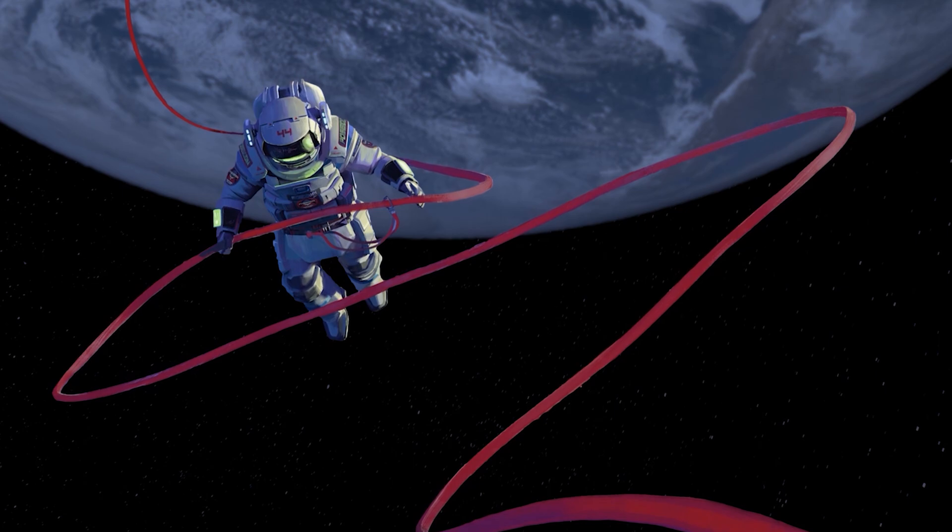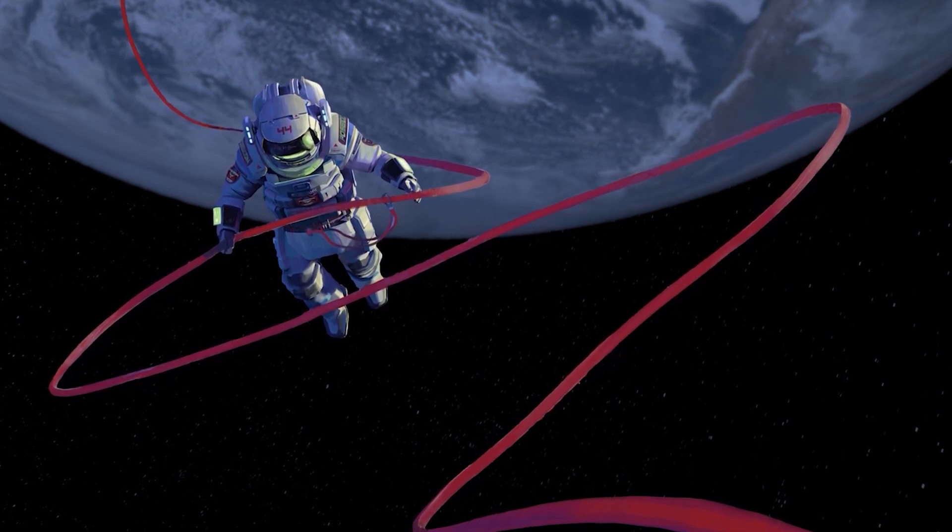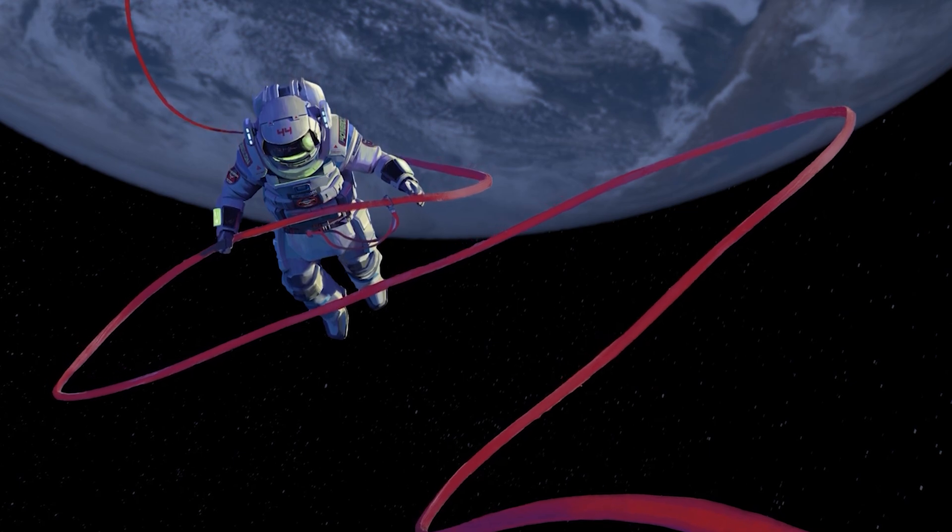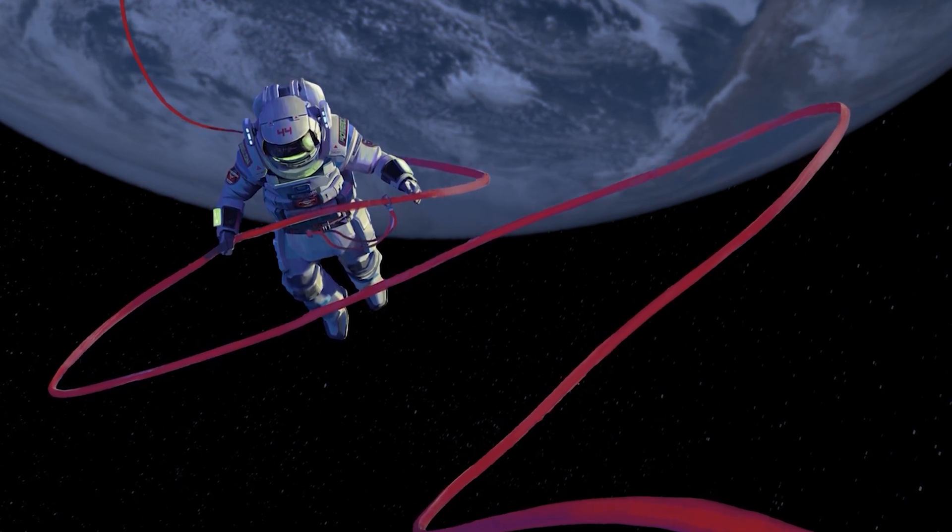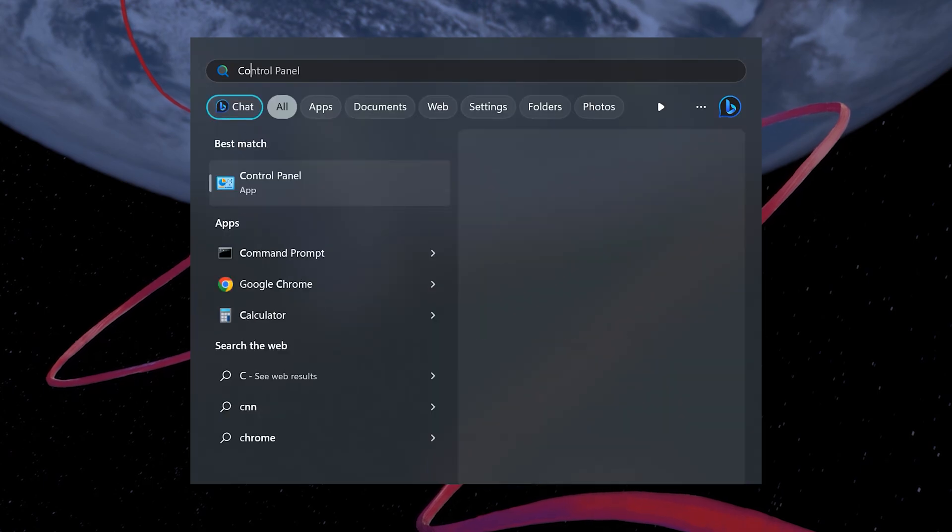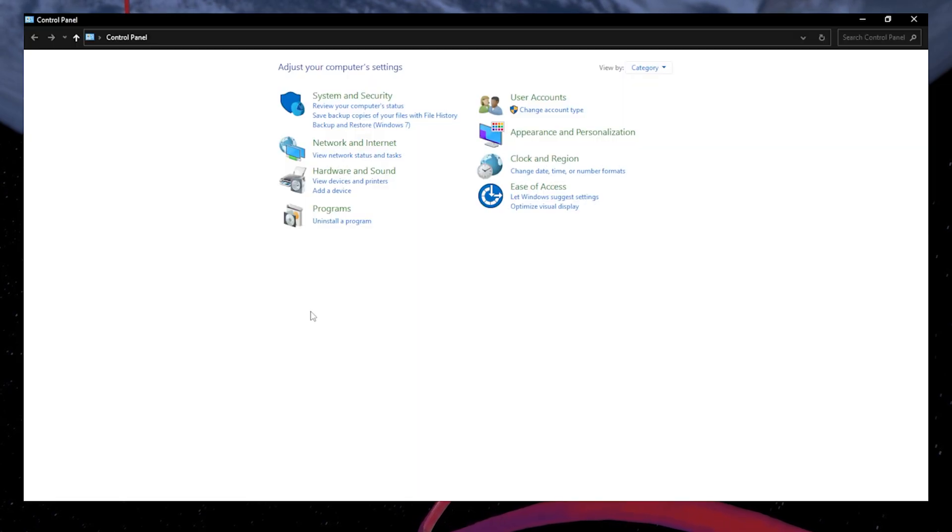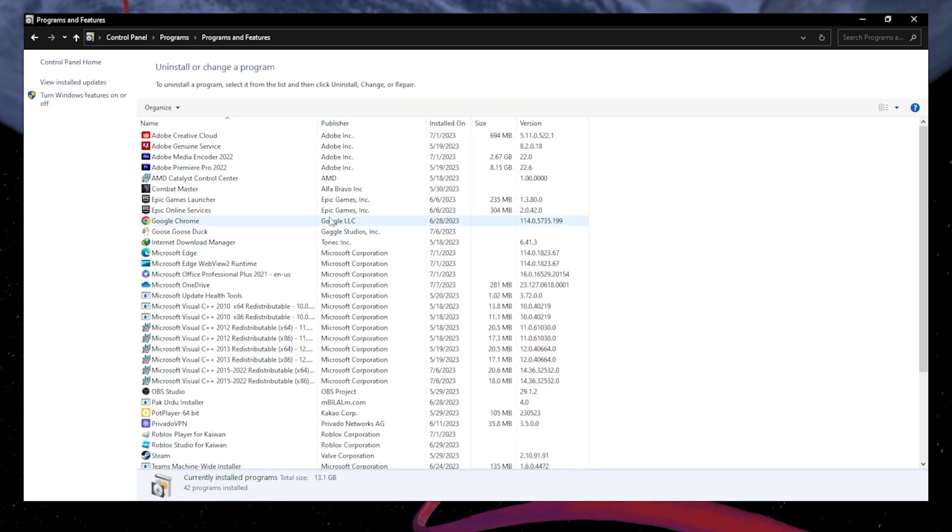However, if you still encounter the same error, you'll be required to reinstall the Steam or Epic Games Launcher to your system. In this example, we will reinstall Steam. Search for Control Panel in your Start Menu Search to open it up. On this window, navigate to Uninstall a Program under Programs.